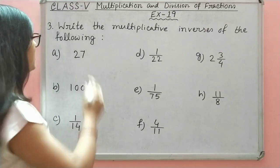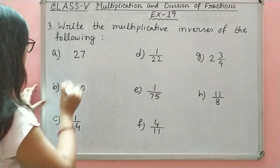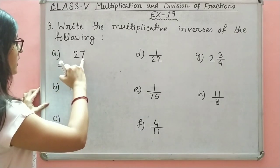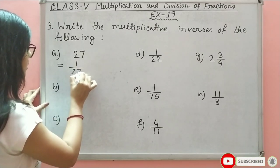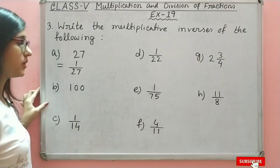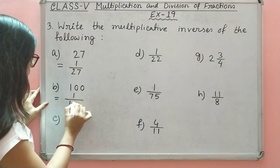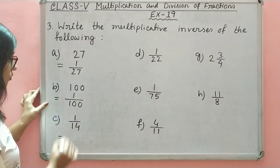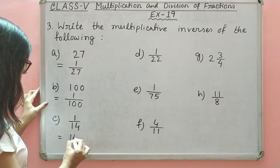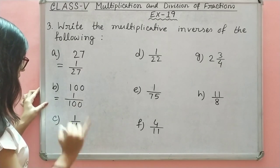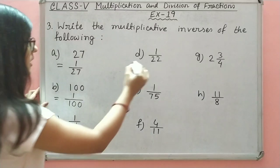Question 3: Write the multiplicative inverses of the following. The multiplicative inverse of 27 — since 1 is in the denominator, 1 comes to the numerator and 27 goes to the denominator — so the multiplicative inverse of 27 is 1 upon 27. The multiplicative inverse of 100 is 1 upon 100. The multiplicative inverse of 1 upon 14 — 14 is in the denominator so it comes to the numerator, and 1 goes to the denominator, but we don't need to write the 1, so the answer is simply 14.